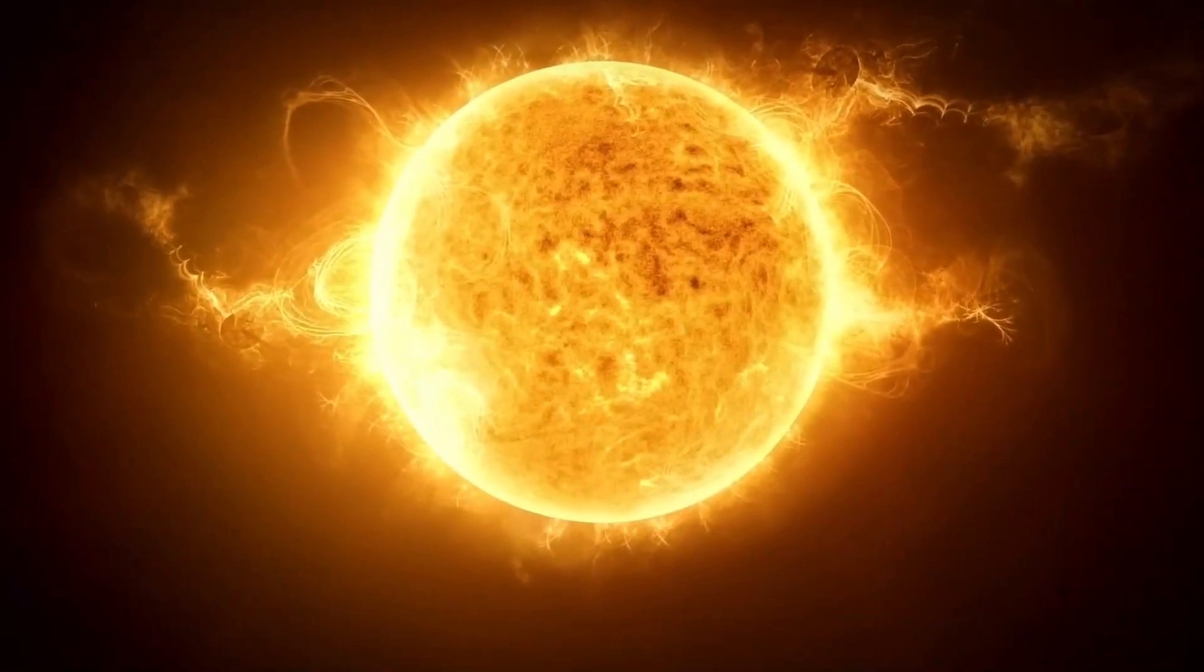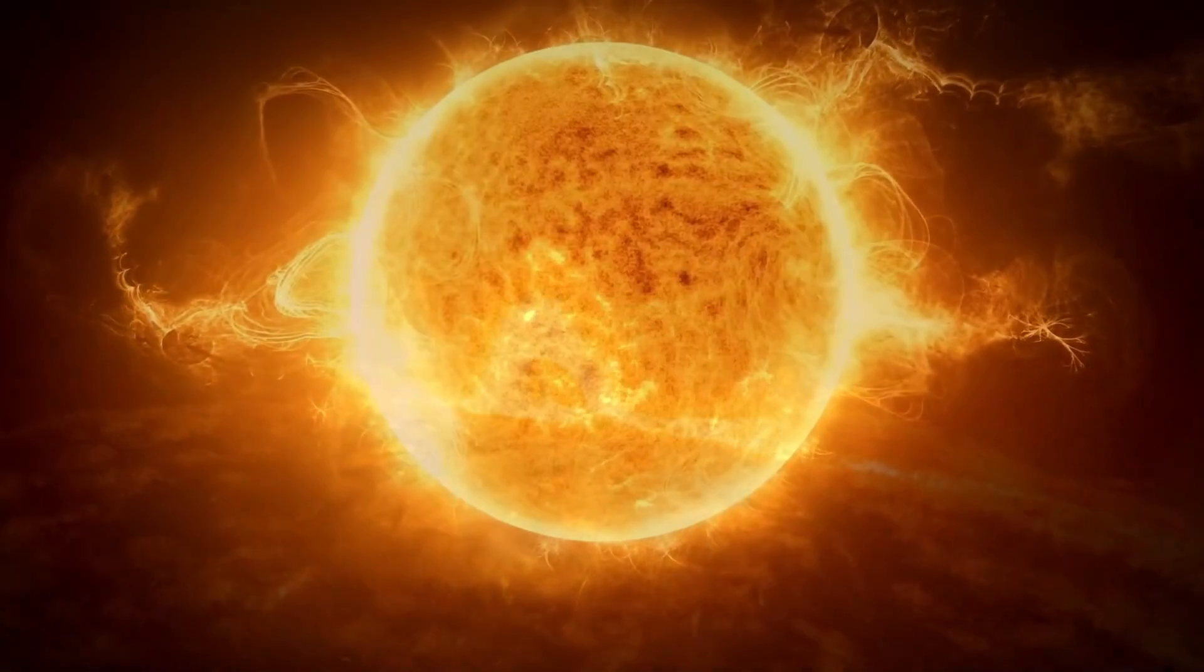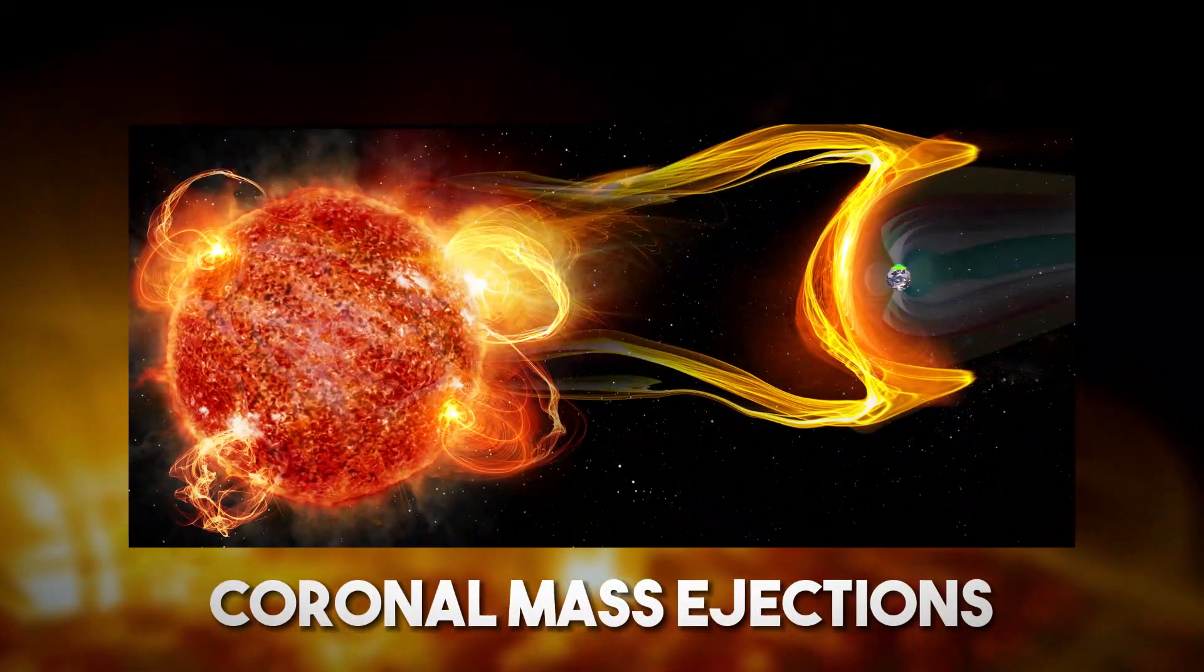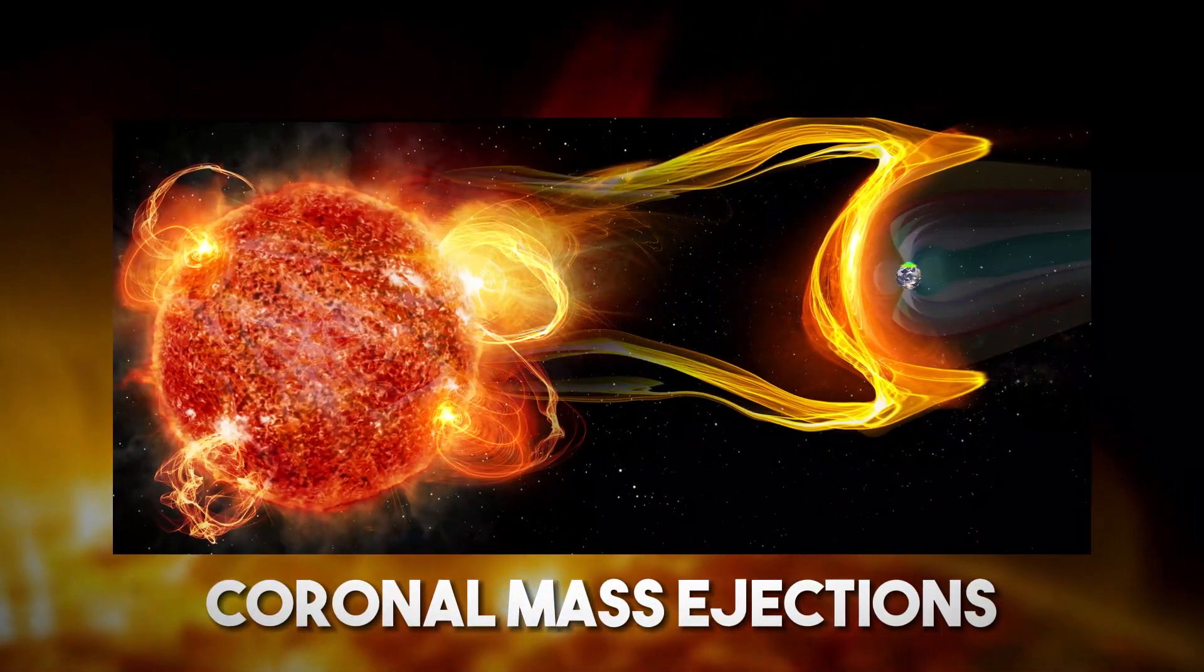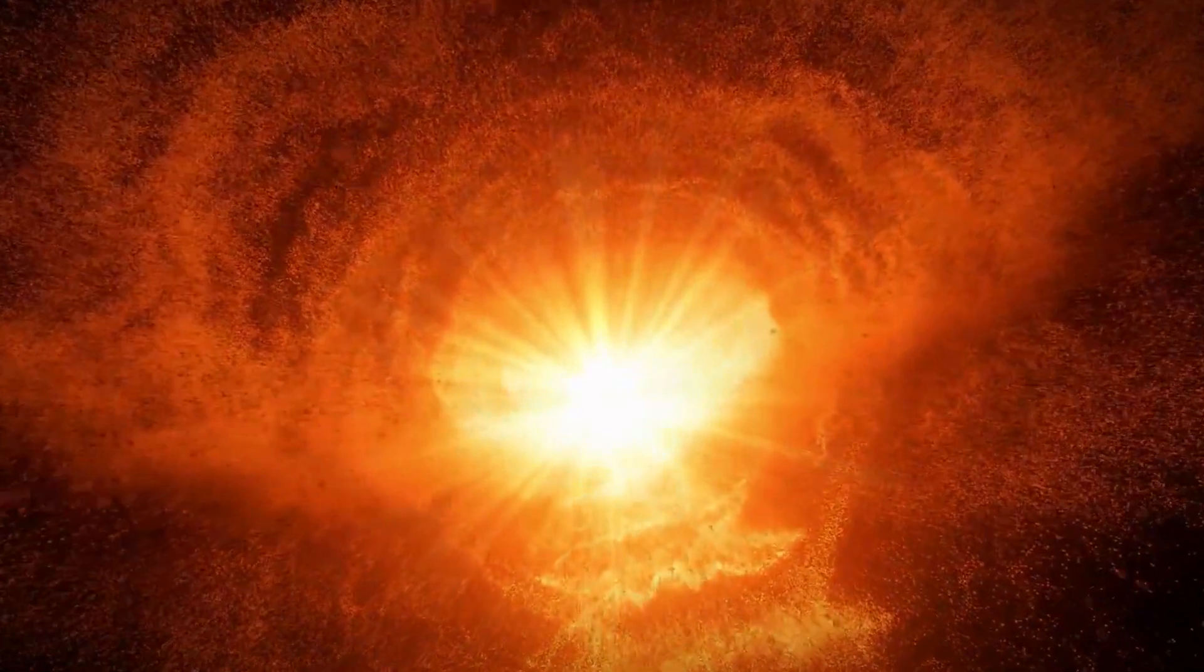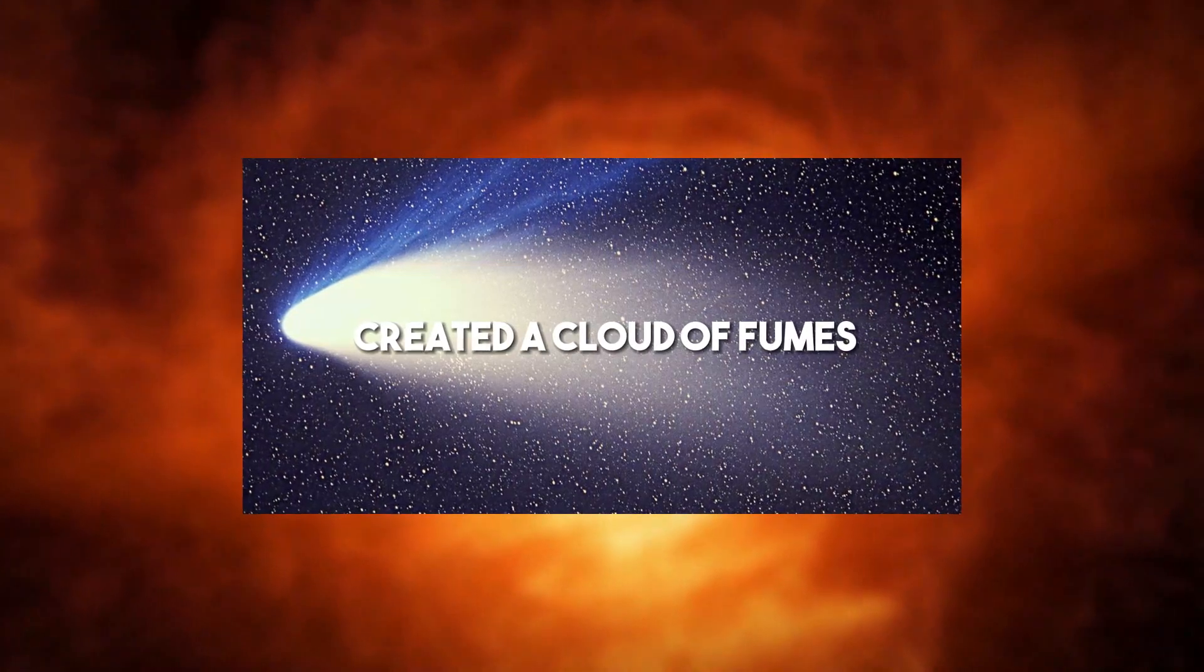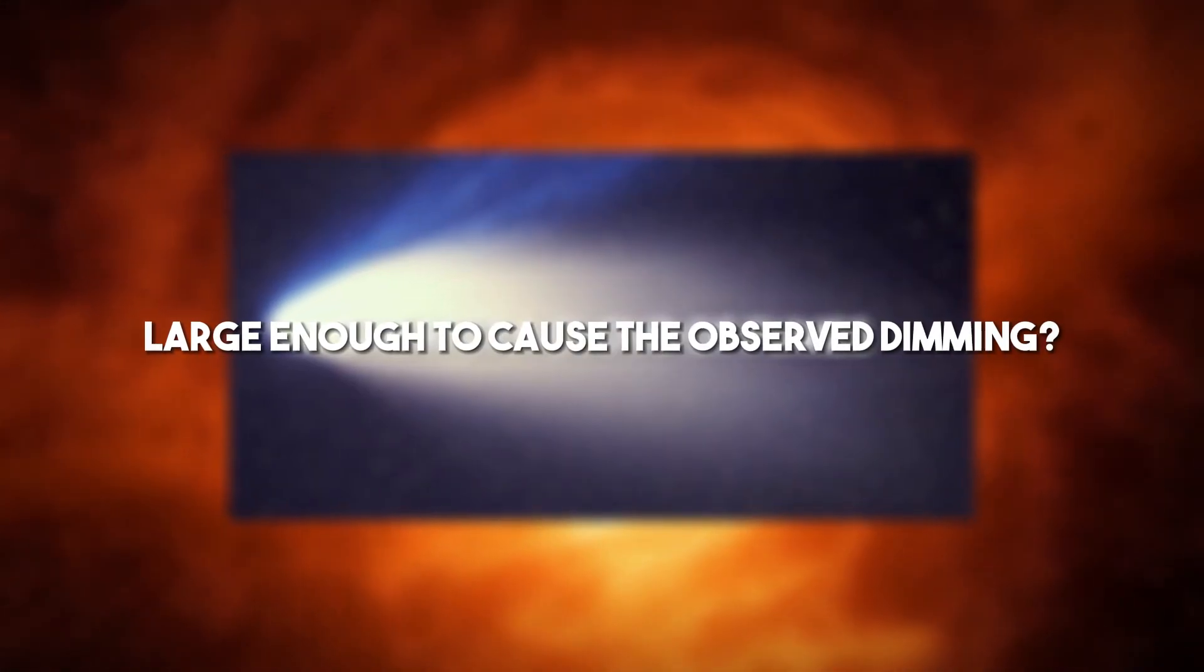Scientists have observed stars spitting out large amounts of matter in events called stellar mass ejections. These are similar to the coronal mass ejections we observe from our own sun, but on a much larger scale. Could it be that Tabby's star had an incredibly large stellar mass ejection that created a cloud of fumes large enough to cause the observed dimming?